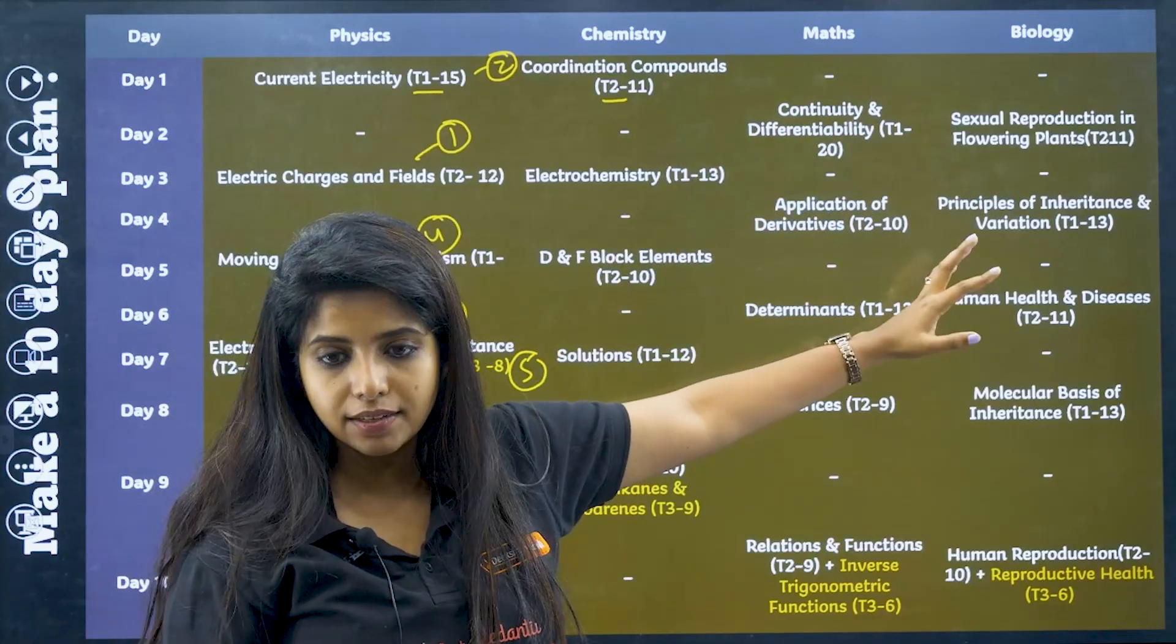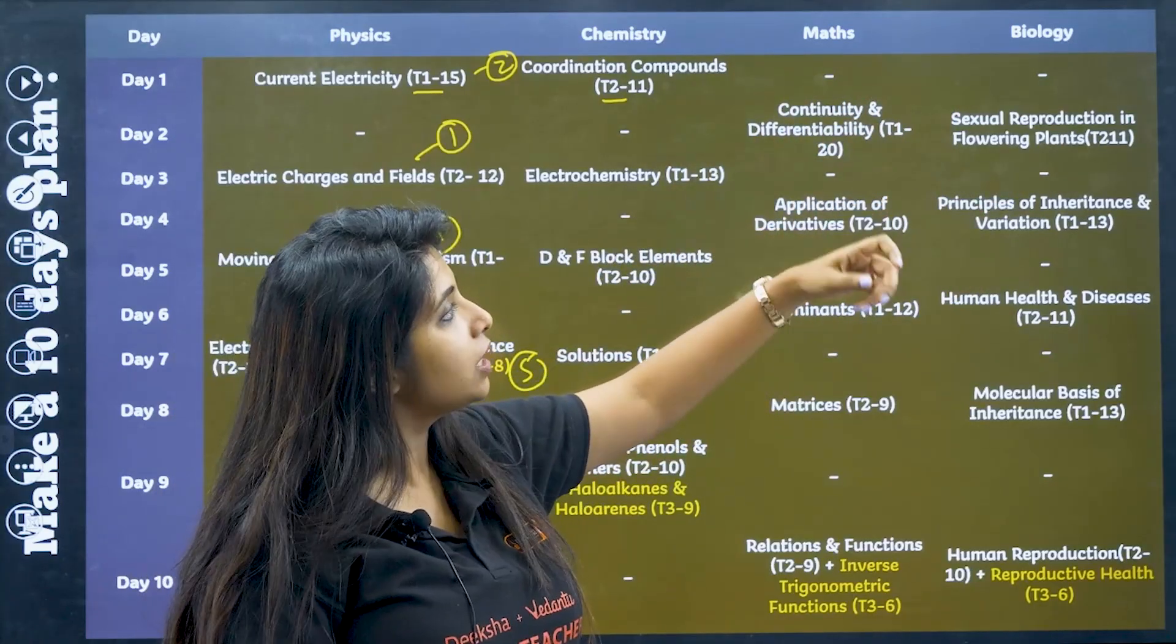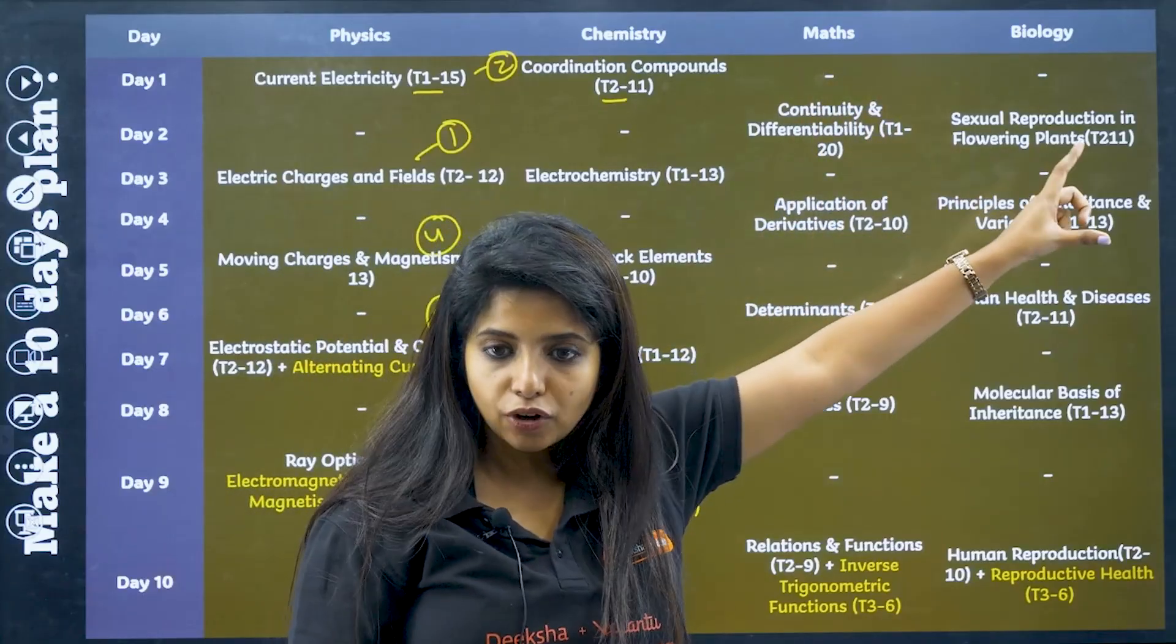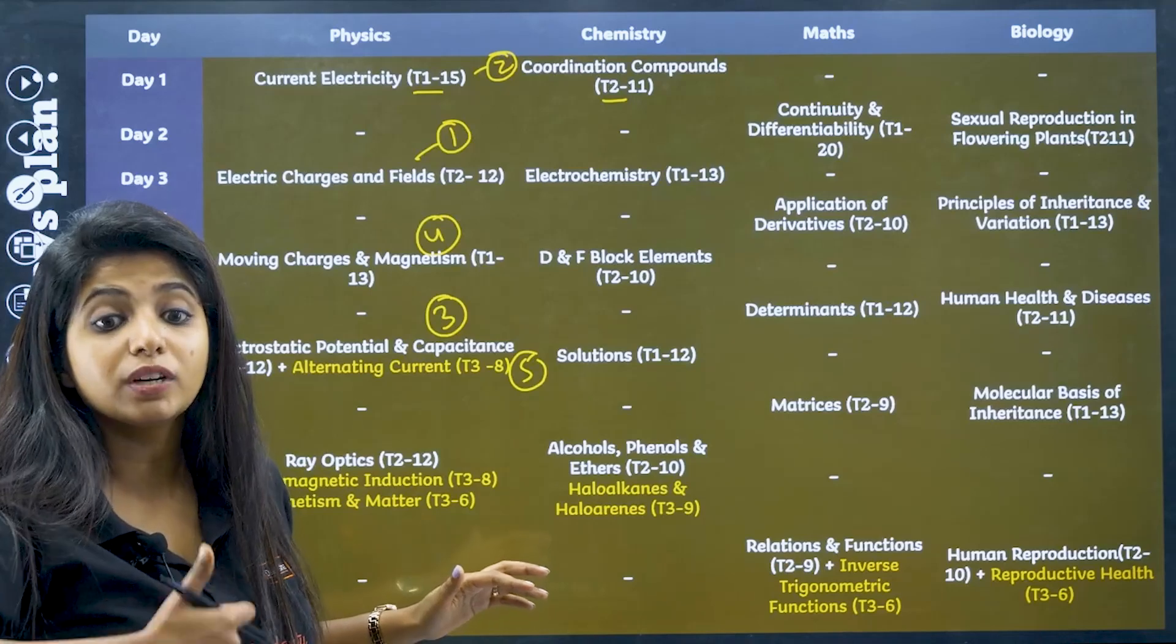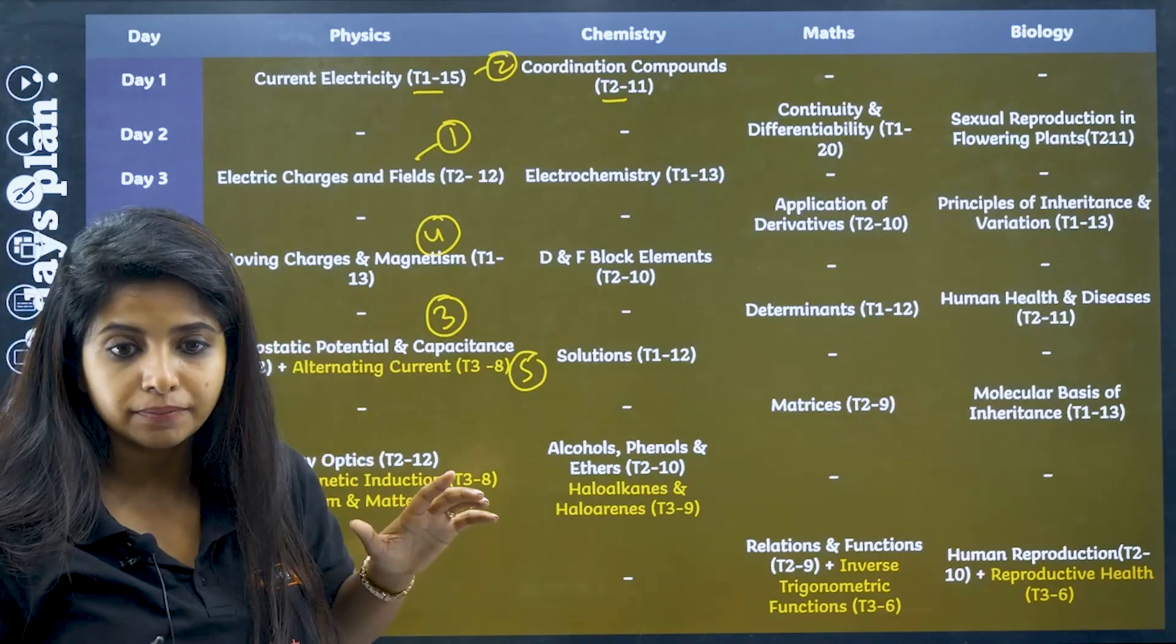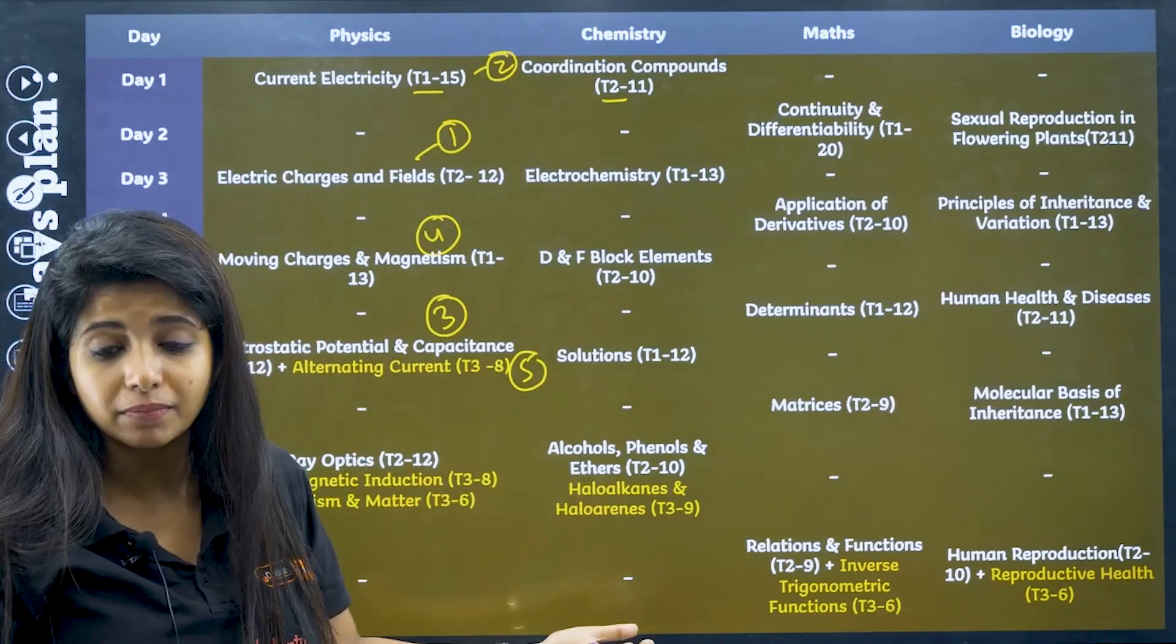So this is how you can target things. And over here also, the same thing I have done - Tier 1 chapter and Tier 2. Now the yellow chapters that you see are the chapters which are left, which I am not able to complete within the 10 day duration. You should understand, I do not have enough time. That's a reality.